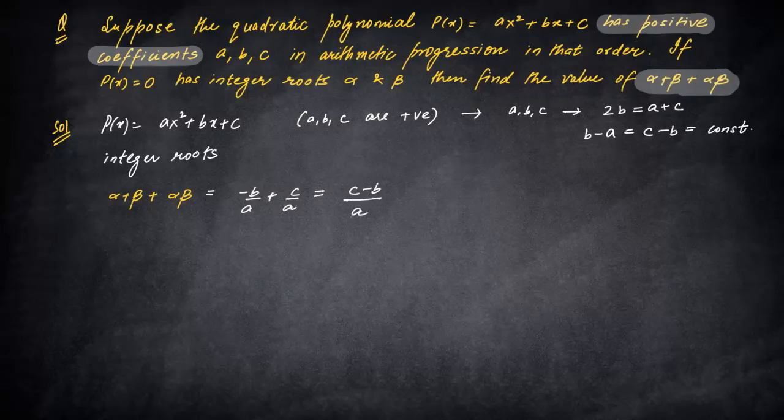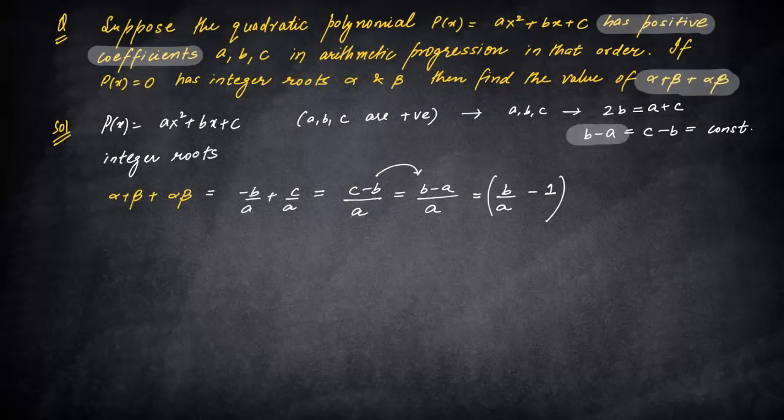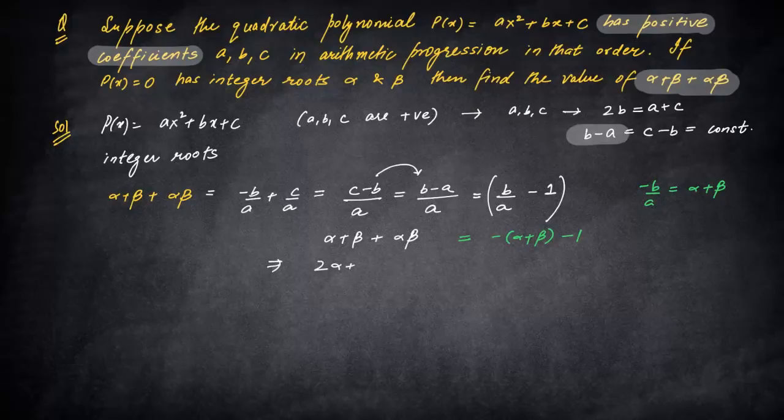If you see, this becomes (c - b)/a. Now the question starts to fall down. This can be written as (b - a)/a, because c - b = b - a from the AP condition. If you notice, this is a beautiful expression: b/a - 1. So you started with α + β + αβ and now you have a relation in terms of b/a.